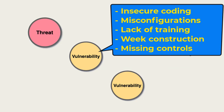Vulnerabilities, or weaknesses, include insecurely written software, misconfigured software or hardware, lack of human training, weak facility construction, and misconfigured or missing physical, administrative, or technical controls.